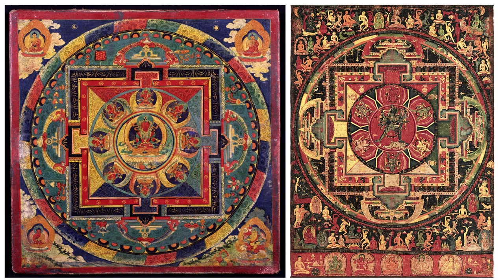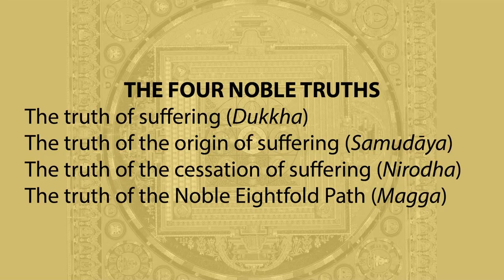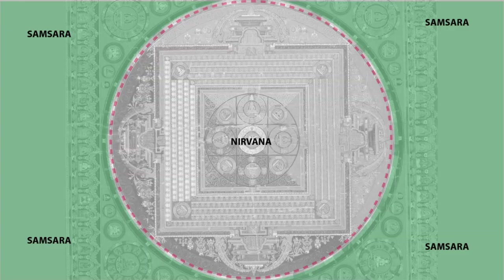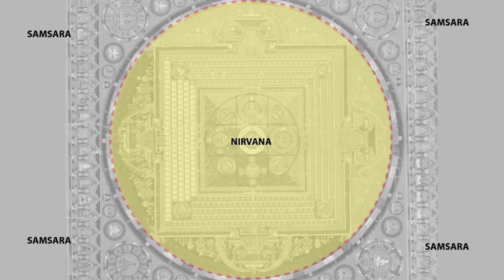Cosmos means much the same as universe, but stresses its order rather than its physical character. The Rig Veda was composed about 1500 BC. For Buddhists, the key principles are the four noble truths: the truth of suffering, the truth of the origin of suffering, the truth of the cessation of suffering, and the truth of the Noble Eightfold Path to Enlightenment. Following this path will take you from the world of Samsara, the everyday world, to the world of Nirvana, where you will enjoy peace beyond desire.